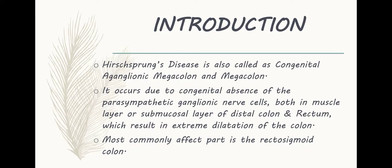Hirschsprung's disease ek congenital abnormality hai jis mein parasympathetic ganglionic nerve cells absent hain in the distal colon — colon means large intestine — and rectum. Jis ki wajah se colon extremely dilate hoti hai aur baby stool out of the body nahi move kar sakta. Most commonly affected part in this condition is the recto-sigmoid colon.